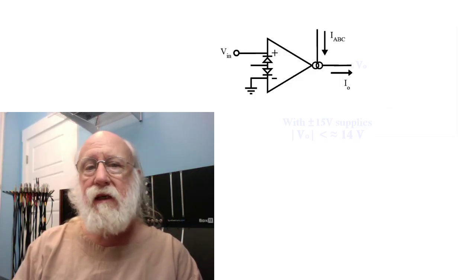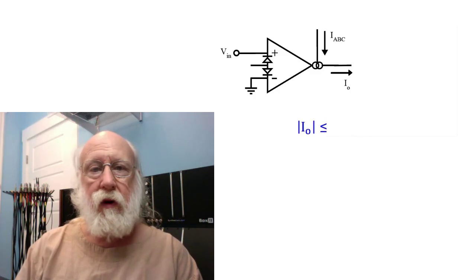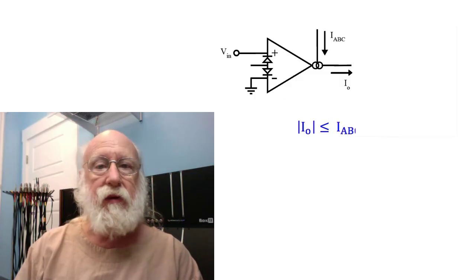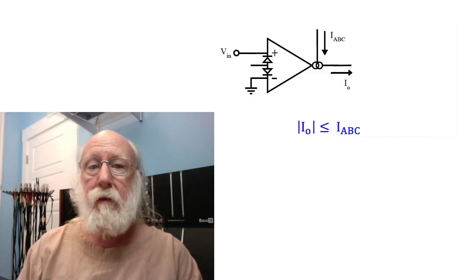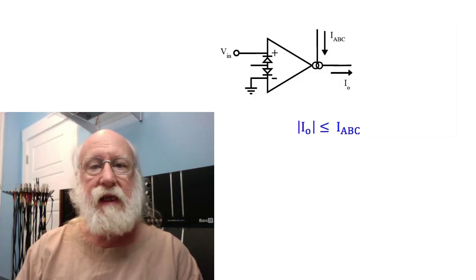Second, the maximum magnitude of the output current is limited by the amplifier bias current. Whatever that is, the output current cannot exceed that magnitude. It might be positive or negative, but it cannot exceed IABC.